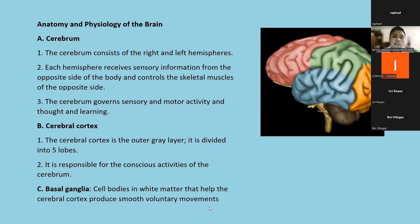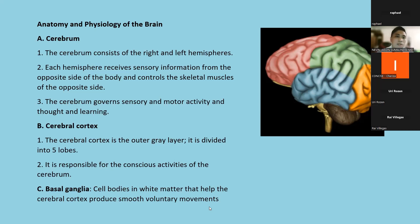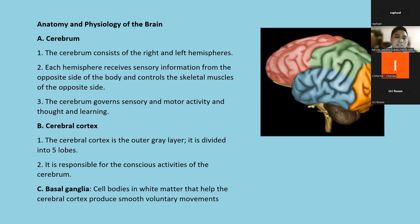Basal ganglia are cell bodies in white matter that help the cerebral cortex produce smooth voluntary muscle movements. They help coordinate movement — for example, if your biceps contracts, then your triceps will also relax. This coordination is the work of our basal ganglia.